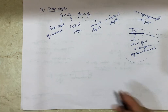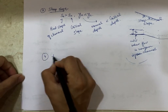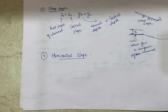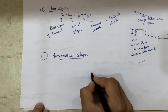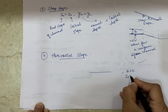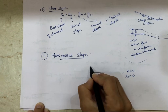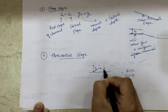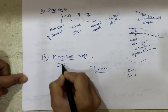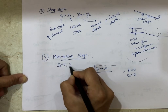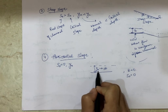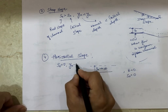The fourth classification of bed slope is horizontal slope. In the case of a horizontal channel, the bed slope S0 is equal to zero — the bed makes no angle, so theta equals zero. In this case the normal depth tends to infinity, because with no slope driving the flow, the normal depth yn → ∞.